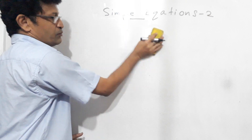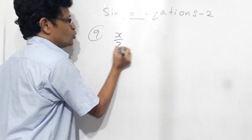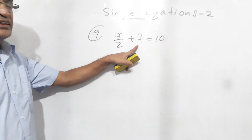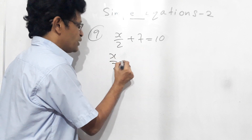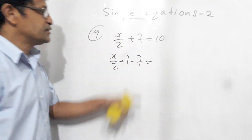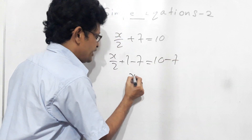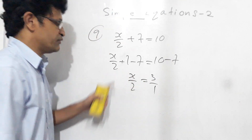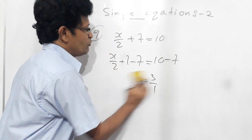Now we will do the ninth question, which is a little different: x over 2 plus 7 equals 10. First, get rid of the 7 by subtracting 7 from both sides — the 7s cancel — leaving x over 2 equals 3. Since 3 means 3 over 1, we do cross multiplication: x equals 2 times 3, which is 6.